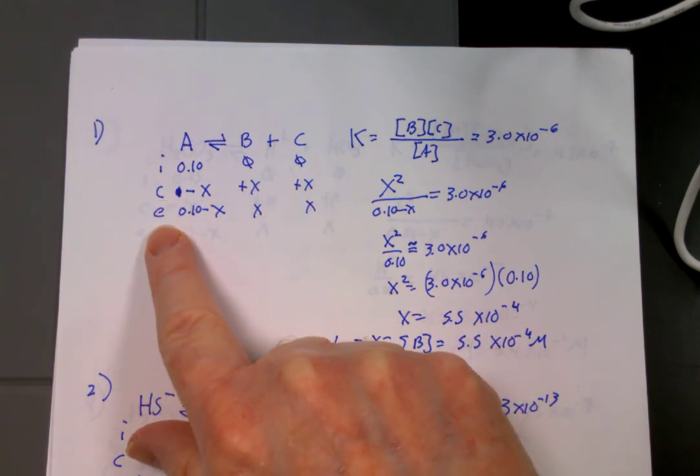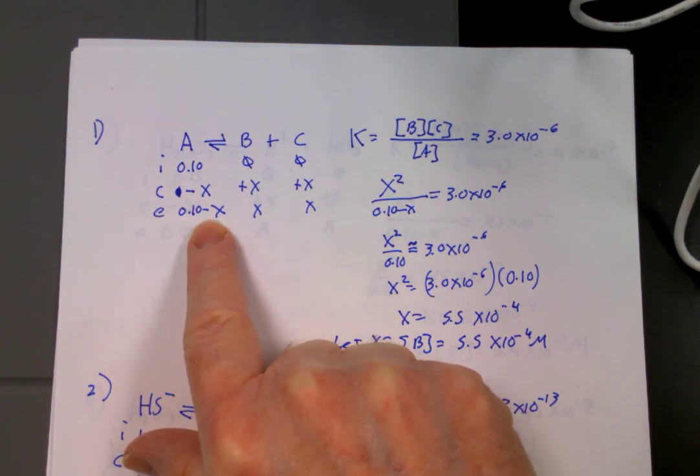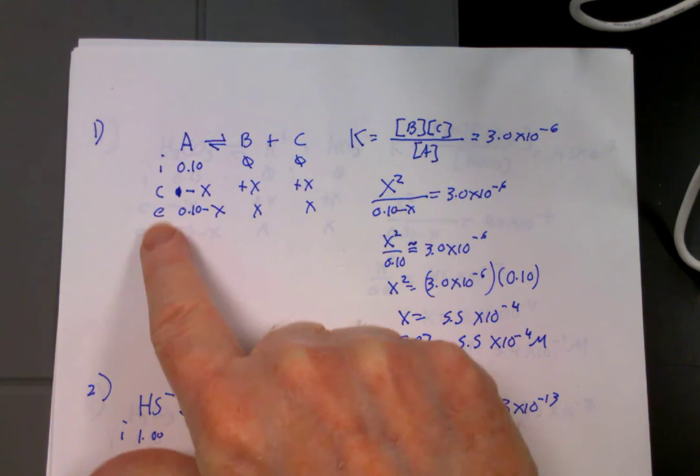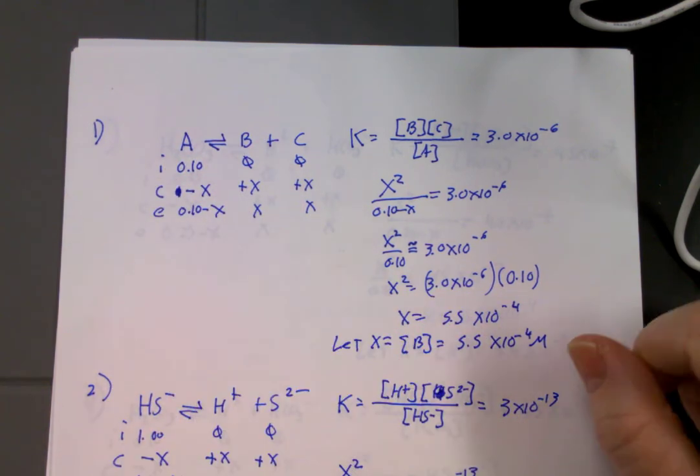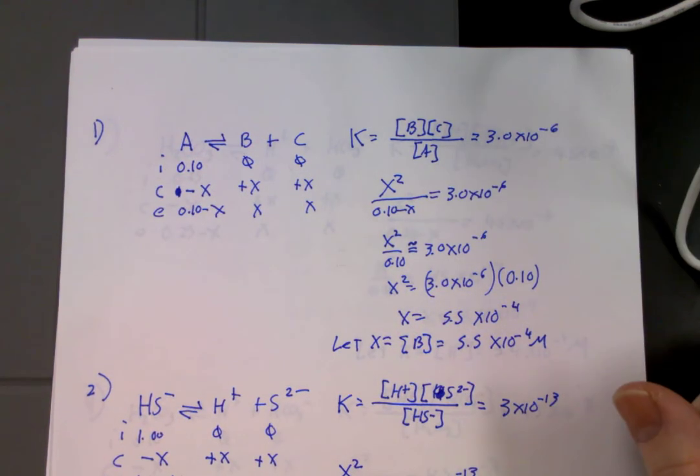And at equilibrium you add those together, you have 0.10 minus x, x, and x. It's a one-to-one ratio for A to B, that's why it's just x. Plug those numbers into a KEQ.